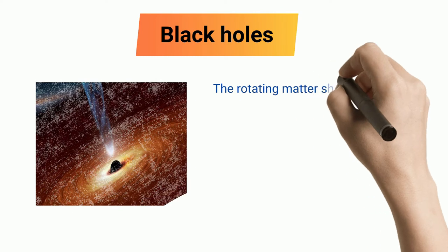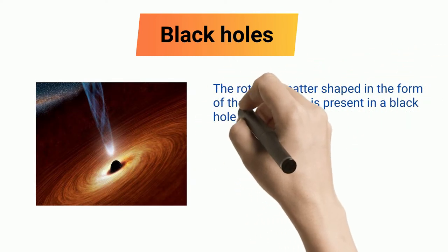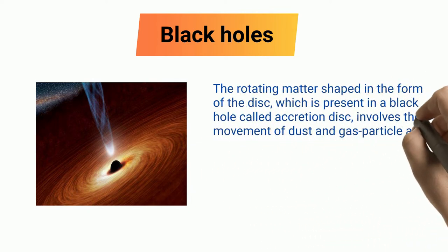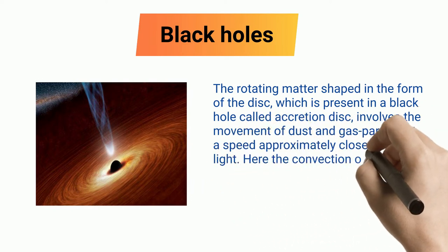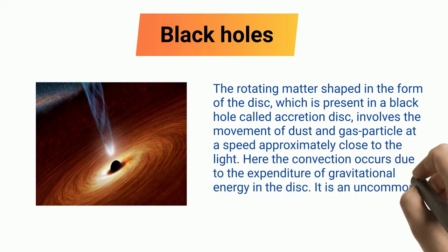Black Holes: The rotating matter shaped in the form of the disk, which is present in a black hole called accretion disk, involves the movement of dust and gas particles at a speed approximately close to the light. Here the convection occurs due to the expenditure of gravitational energy in the disk. It is an uncommon example of convection.